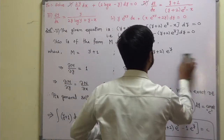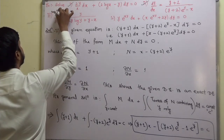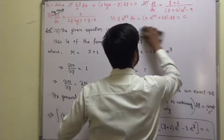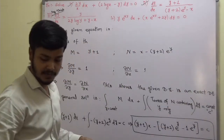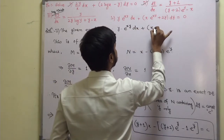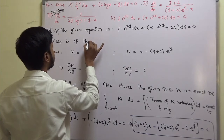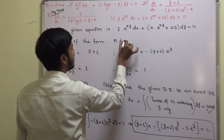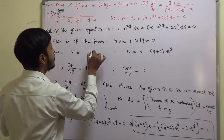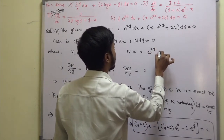You now have problems 3 and 4. I will give you problem number 3 to try yourself, and I will solve problem number 4. The given equation for problem 4 is: y·e^(xy) dx + (x·e^(xy) + 2y) dy = 0.